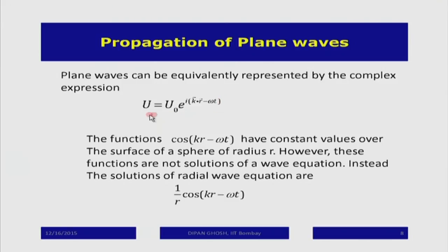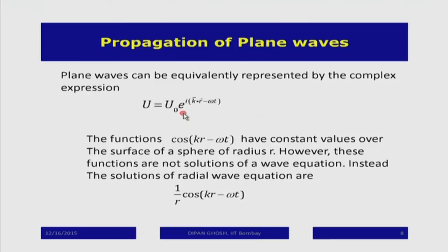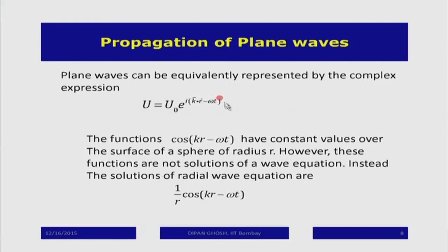Dealing with sine and cosine functions is somewhat difficult because differentiation mixes them up. For mathematical convenience, instead of taking cosine or sine of (k dot r minus omega t), we take the corresponding complex quantity. The wave is the real part of e to the power i(k dot r minus omega t), since e to the i theta equals cos theta plus i sin theta. We carry all calculations using complex numbers because complex arithmetic is much easier — differentiating an exponential gives back an exponential, whereas differentiating a sine gives a cosine and vice versa.